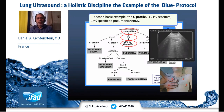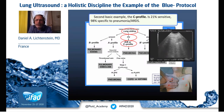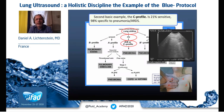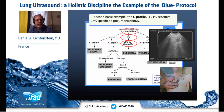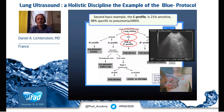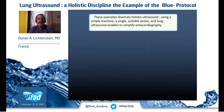The B profile is 97% sensitive and 95% specific to hemodynamic pulmonary edema. Here we have another of the eight profiles of the BLUE protocol: a lung consolidation — it is small, but this is called the C profile. The C profile is not frequent — 21% of cases — but when you see it, it is 98% specific to pneumonia and ARDS.